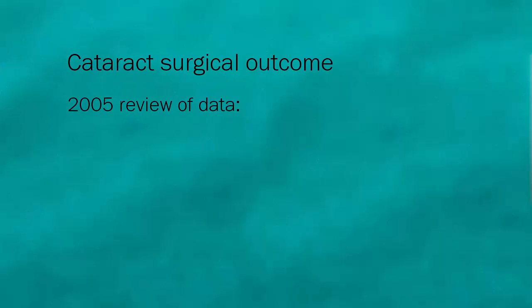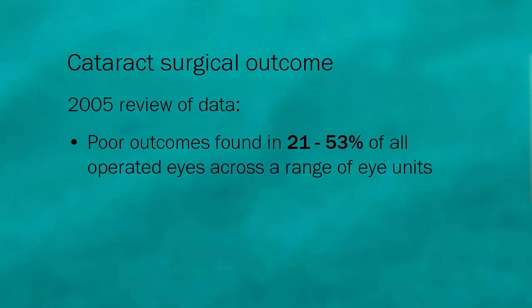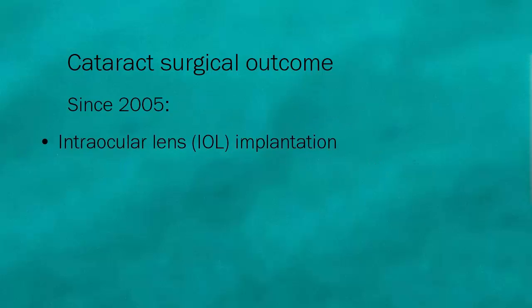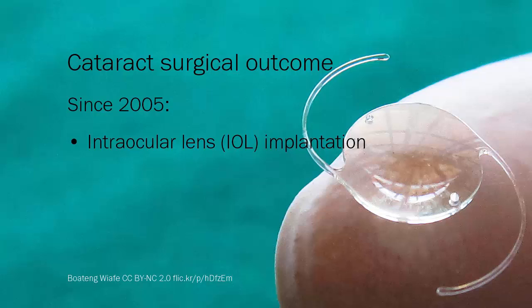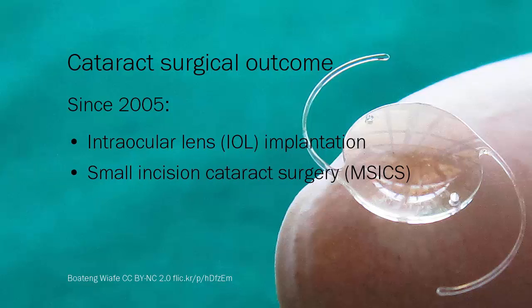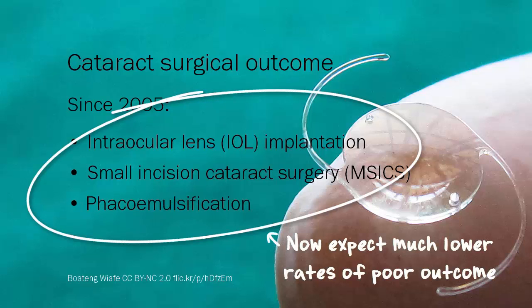In 2005, a review of data from many population-based and rapid assessment surveys indicated that poor outcomes, less than 6/60, were being found in between 21 and 53 percent of all operated eyes across a range of eye units. Most of these poor outcomes were due to aphakia or breakage of spectacles. Since then, intraocular lens IOL implantation has become the norm in cataract surgery, with additional improvements in surgical techniques such as small incision cataract surgery and phacoemulsification. As a result, we can now expect much lower rates of poor outcome.